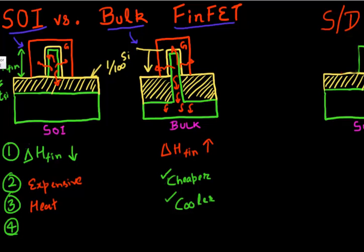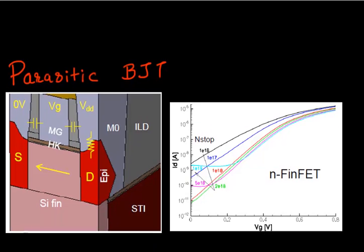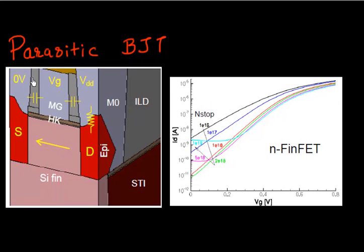So let me describe that using this cartoon. So what is this parasitic BJT? So as we discussed earlier, you have in a FinFET device your gate wrapping around your fin, and it does a pretty good job of controlling the current in this fin. But there's life underneath, especially if you are making your FinFET on a bulk substrate.